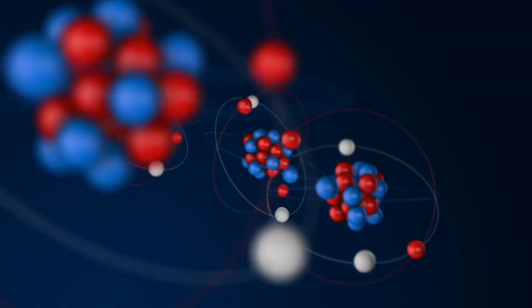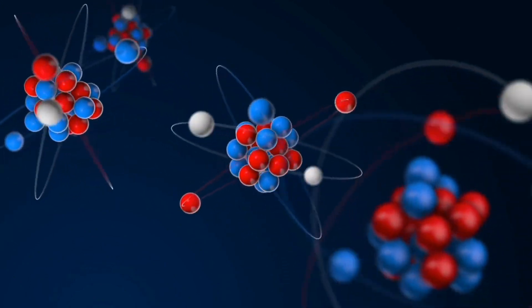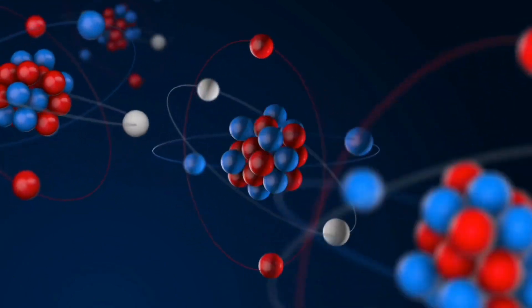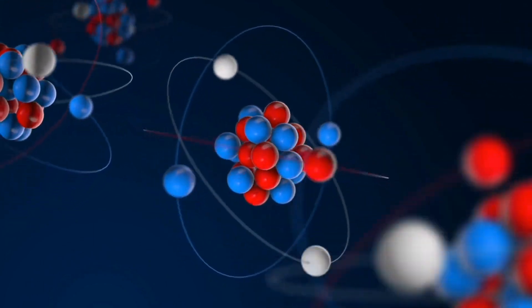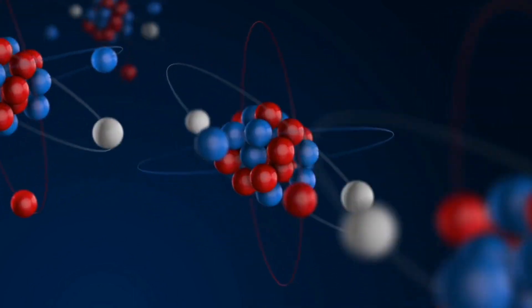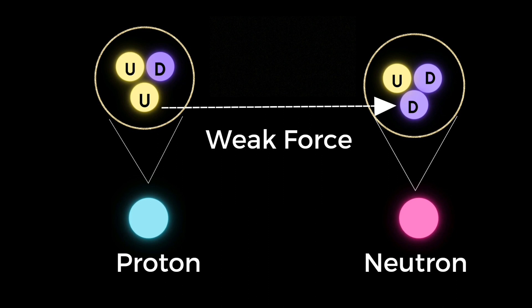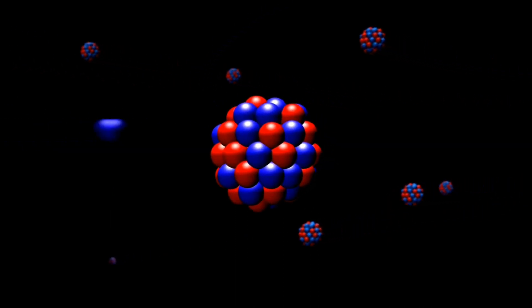The weak force is responsible for interactions between subatomic particles — the tiny particles that are the building blocks of matter, like protons, neutrons, and electrons. In particular, the weak force can change one quark type into another. Protons and neutrons are made of two quark varieties: up and down. The weak force can turn a down quark in a neutron into an up quark, which would change the neutron into a proton and switch its electric charge from neutral to positive.